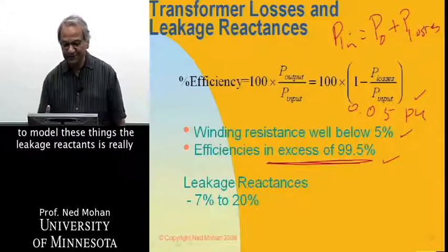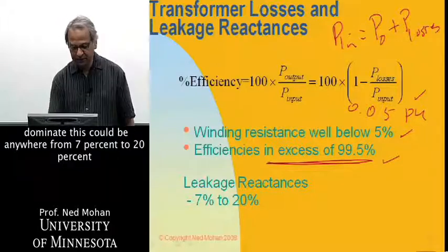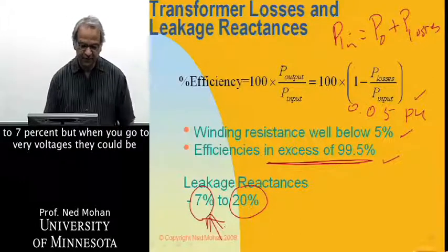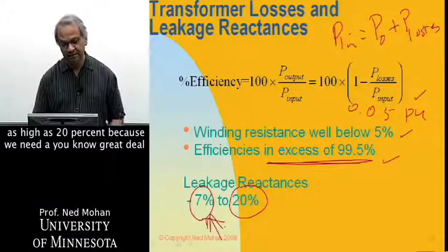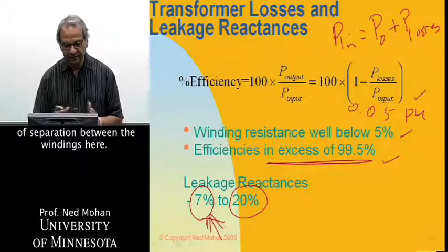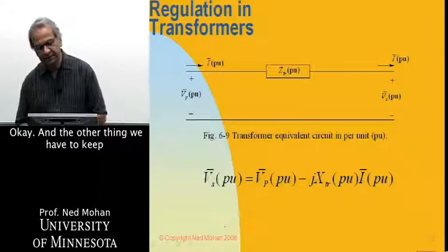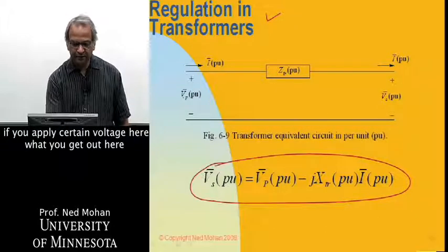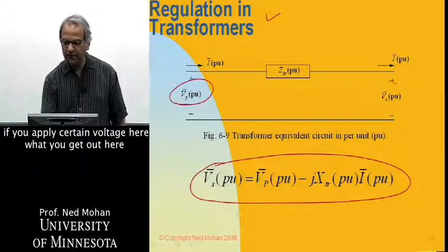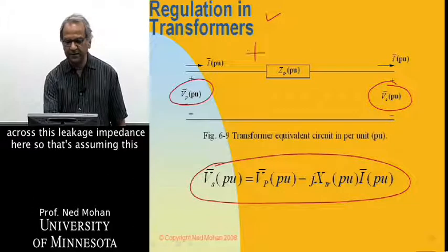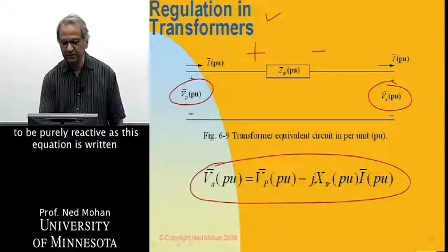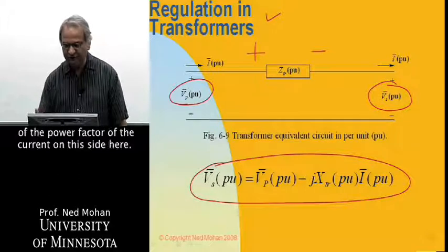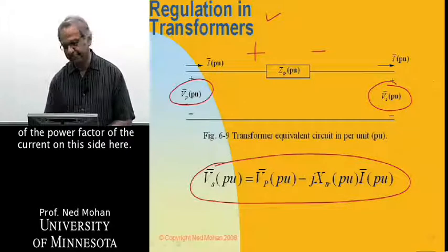So, when we go to model these things, the leakage reactance is really dominant, which could be anywhere from 7% to 20%. So, at low voltages, low voltage transformers, they are close to 7%, but when you go to very high voltages, they could be as high as 20%, because we need a great deal of separation between the windings here. And the other thing we have to keep in mind is something called regulation in these transformers, and that is given by this equation, as you'll expect. You know, if you apply certain voltage here, what you get out here in per unit is not the same because of the drop across this leakage impedance here. So, assuming this to be purely reactive, this equation is written, and you can see that this drop is a function of the power factor of the current drawn on this side here.